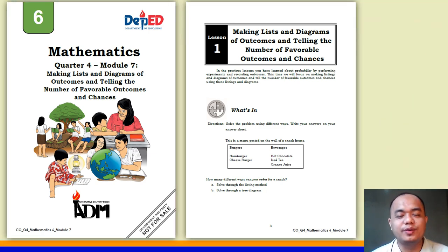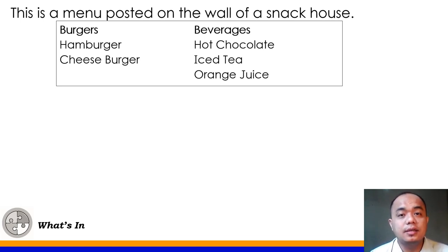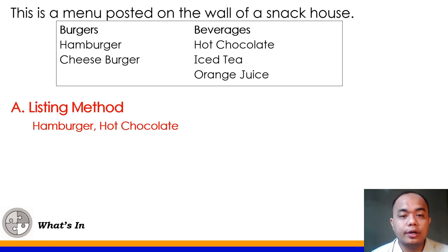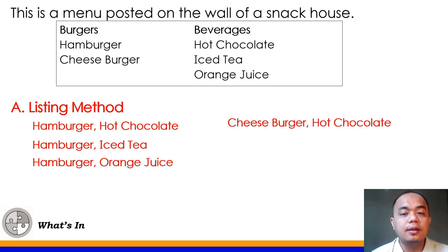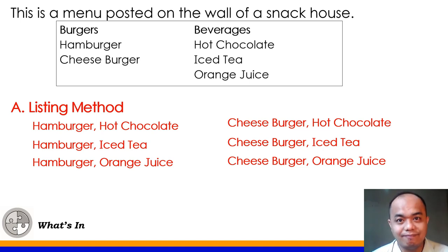Let's have the What's In part of your module. Directions: solve the problems using different ways. We have here a menu posted on the wall of a certain snack house. They serve hamburger and cheeseburger, and beverages like hot chocolate, iced tea, and orange juice. The first method we are going to use is the listing method. Possible pairs: hamburger-hot chocolate, hamburger-iced tea, hamburger-orange juice, cheeseburger-hot chocolate, cheeseburger-iced tea, and cheeseburger-orange juice. So nakikita natin sa pamamagitan ng listing method, ang pagpipilian ng mga customer — yung mga possibility — ay anim.